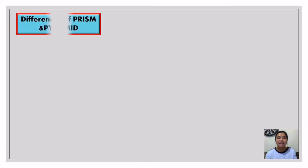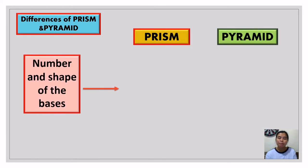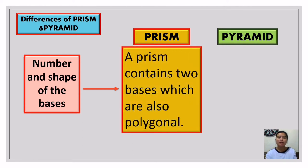Now let's move to the differences between prisms and pyramids, starting with the number and shape of the bases. What is the difference in the number and shape of their bases? Starting with the prism: a prism contains two bases which are polygonal. As you can see, a prism has two bases.